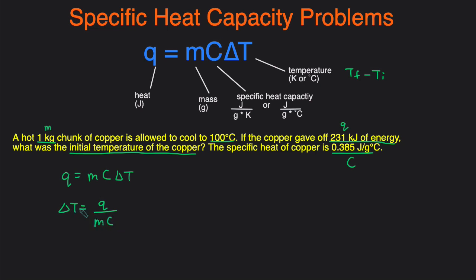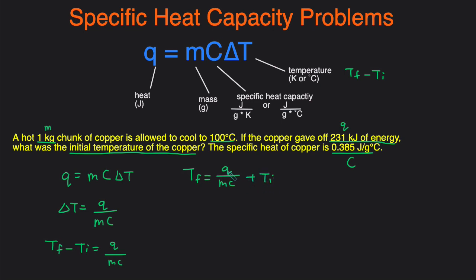We know delta T is the final temperature minus the initial temperature. So T_final minus T_initial equals Q divided by MC. Our goal is to solve for T_initial. We add T_initial to both sides, getting T_final equals Q divided by MC plus T_initial. Then we subtract Q divided by MC from both sides, giving T_initial equals T_final minus Q divided by MC. That's how we get the initial temperature.